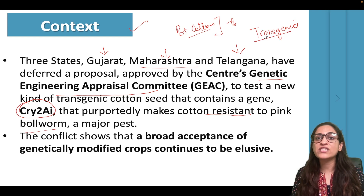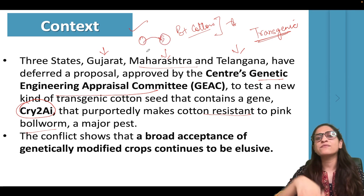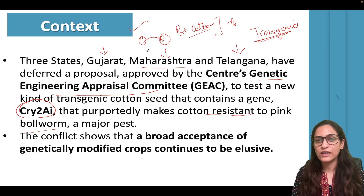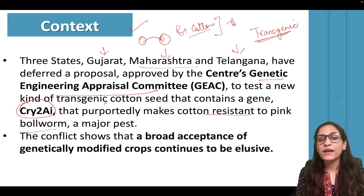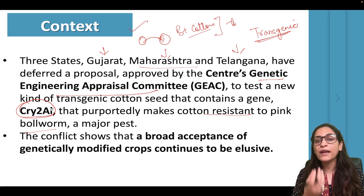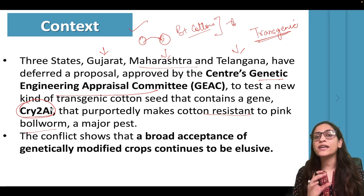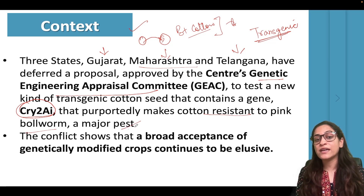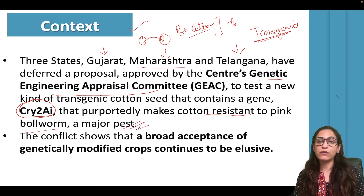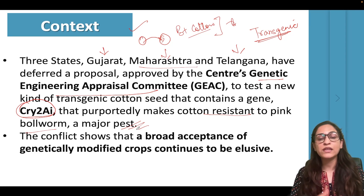What is the meaning of transgenic? Transgenic means a gene from one species has been transferred to another species — from one organism transferred to another organism. So cry2Ai gene is used in cotton crops to make them resistant to pink bollworms.